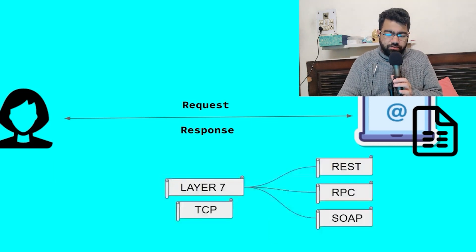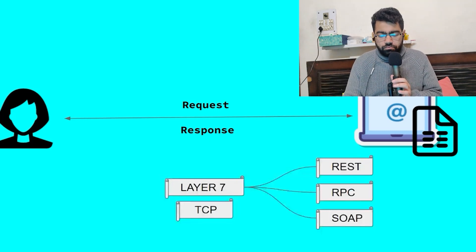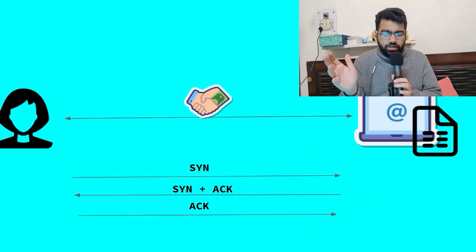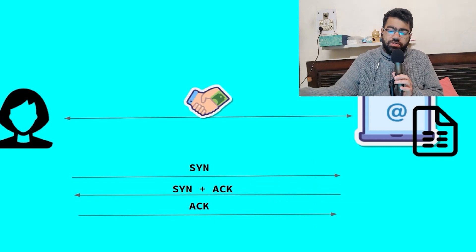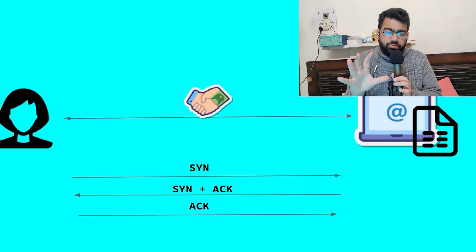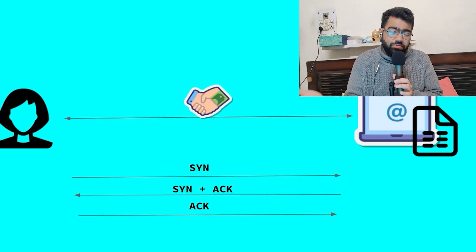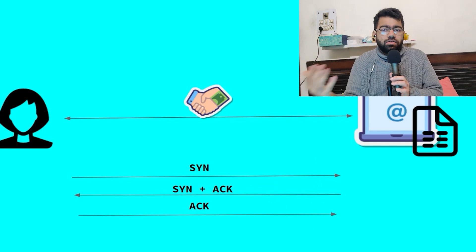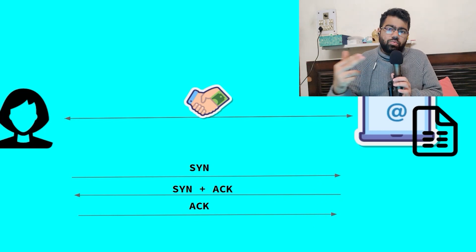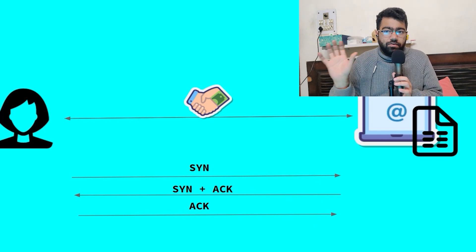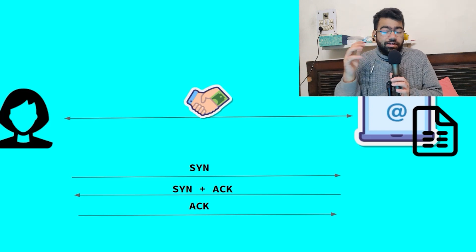You can convert layer 7 protocols into any type of API call — REST, RPC, SOAP, whatever you want. To create a TCP connection, a handshake is required: first the client sends a connection request, the server responds with acknowledgement, then the client sends an acknowledgement back, and the connection is established. Establishing this connection requires three network calls, which is called a round trip time, so a TCP connection takes a lot of time.